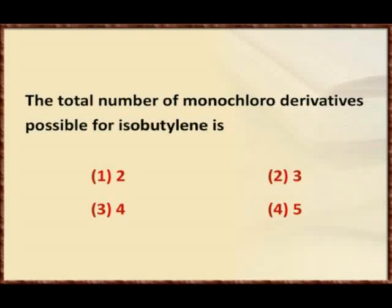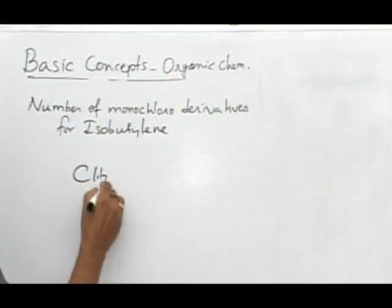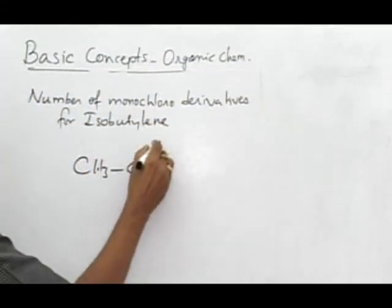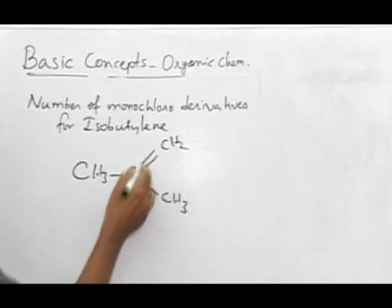In this problem, we are going to find out the number of monochloro derivatives for isobutylene. So what is isobutylene? CH3, here C, double bond, CH2, then another methyl group. Or we can say this is 2-methylpropene.